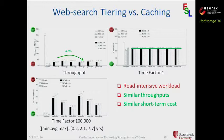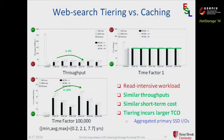When we take a look at the long-term cost, we can see that in the long term tiering incurs larger total cost of ownership. The reason is due to the aggregated primary SSD IOs in the tiering system. For this workload, tiering incurs larger total cost of ownership.